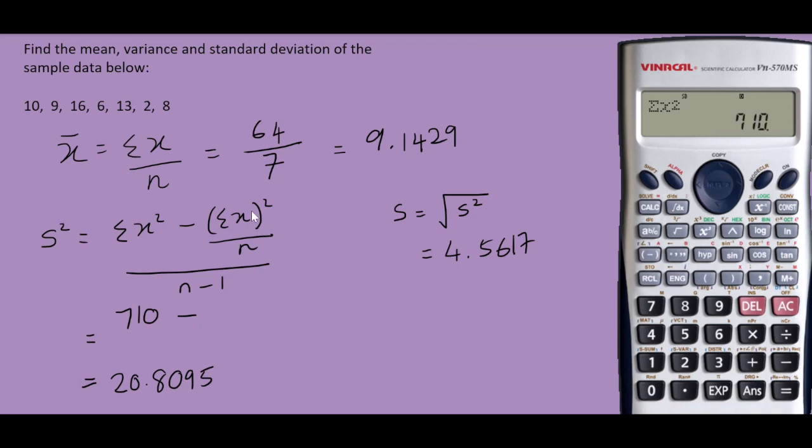The sum of X is 64, square over N is 7, over N minus 1 would be 6. And there you go. Sample variance and sample standard deviation.